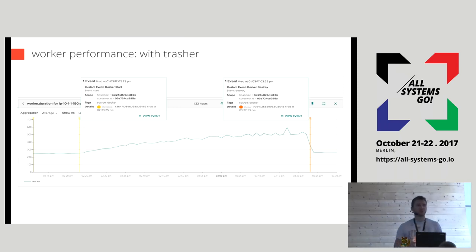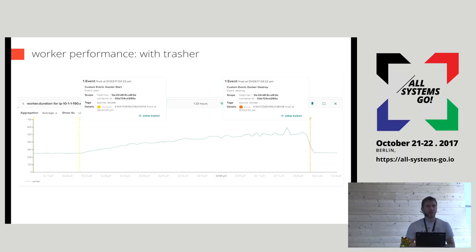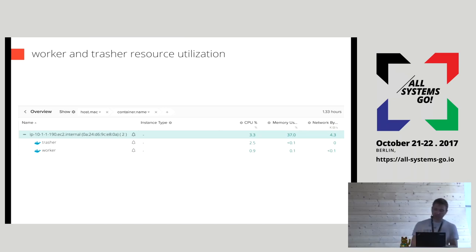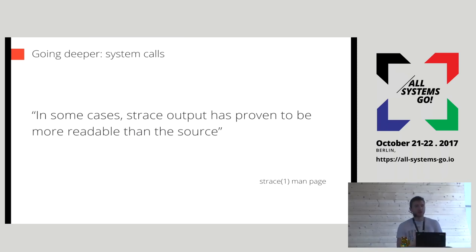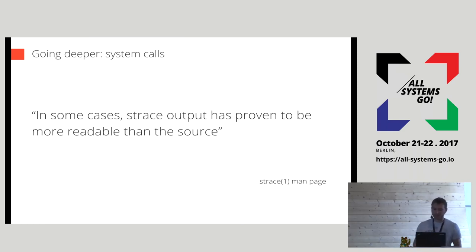To do more advanced troubleshooting, I like to get an x-ray of my applications using the system call interface. I'm going to use Sysdig because I'm a core developer and it's container-friendly, but any system call sniffer will do. At the system call level, I can get a pretty good idea of what a Linux process is doing, even without its source code. There's a quote I really like from the strace man page: 'In some cases, the strace output has proven to be more readable than the source.' This resonates very well with my experience.